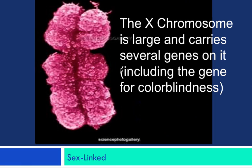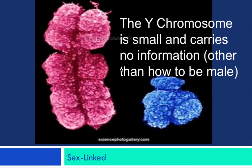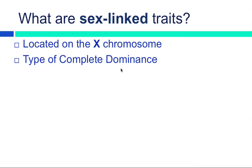Now, if you'll remember back from the last unit, Unit 7, when we talked about meiosis and chromosomes, we learned that the X chromosome is large and carries several genes on it, including genes for color blindness, male pattern baldness, etc. The Y chromosome is small and carries little to no information other than the information on how to become a male. So keep that in mind as we go through here.